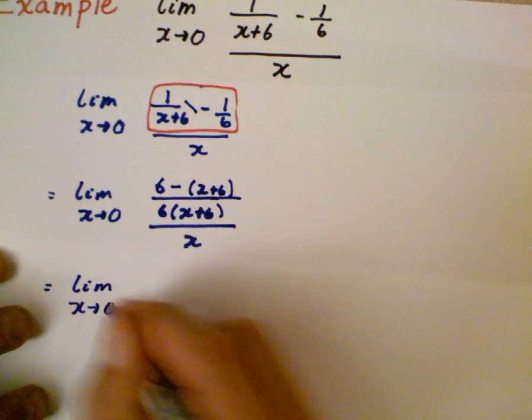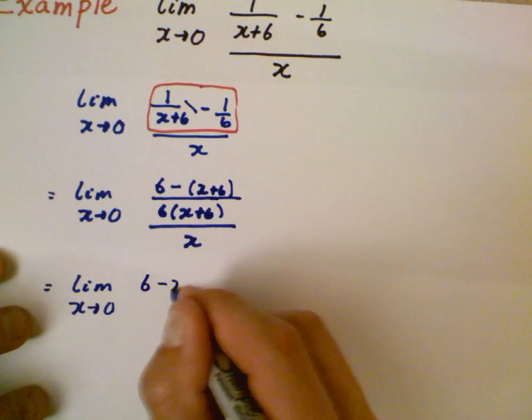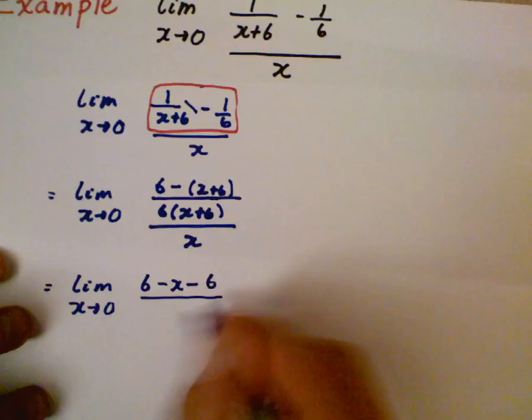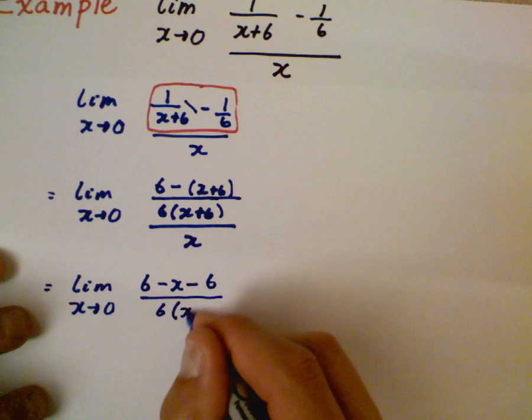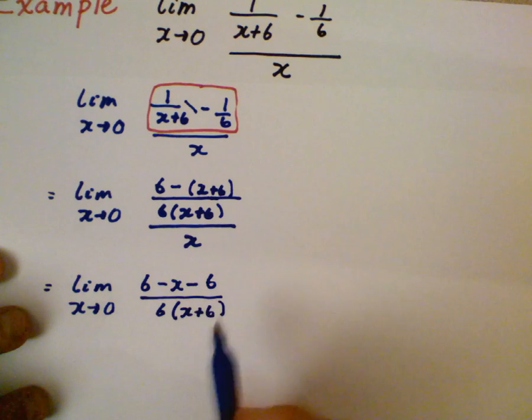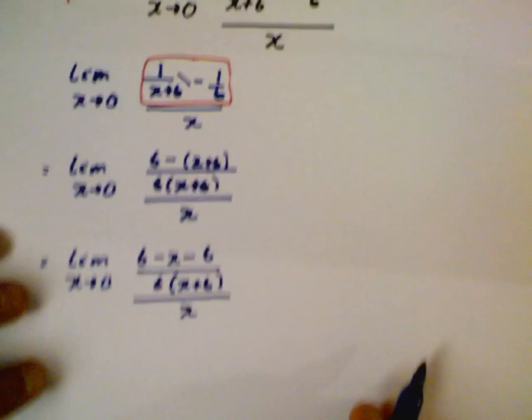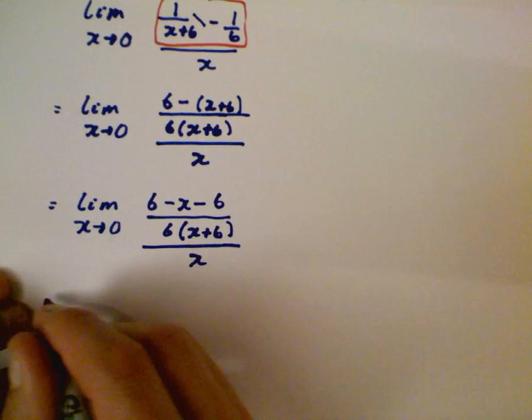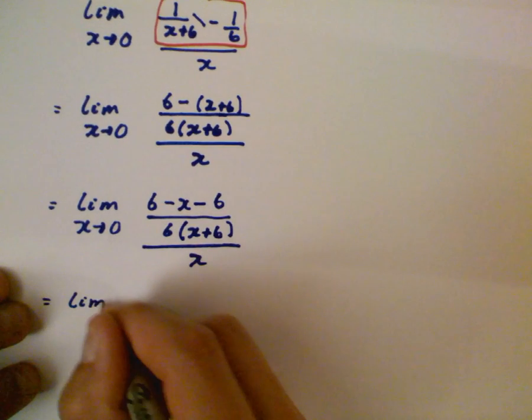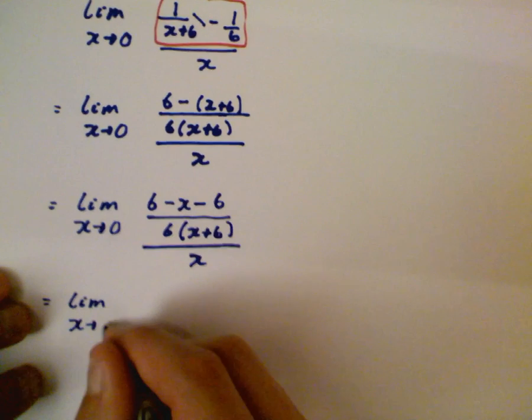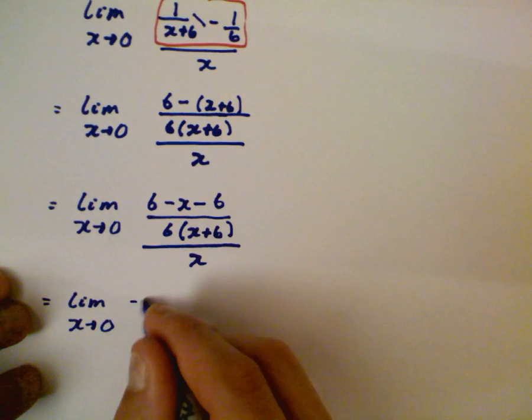So you're going to have 6 minus x minus 6 all over 6 times the quantity x plus 6 all divided by x. Like I said, still working that numerator and doing nothing with the denominator. We get some terms that cancel out, we've got some additive inverses, so 6 and minus 6, so you get negative x over 6 times x plus 6 all over x.